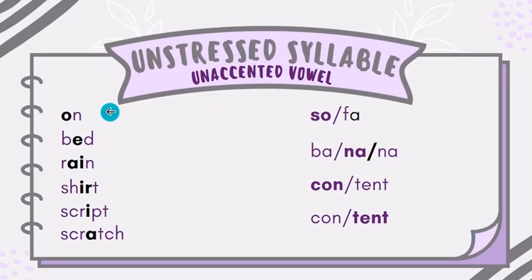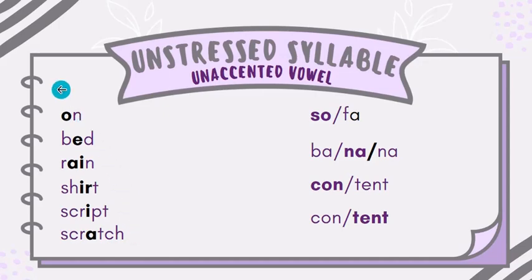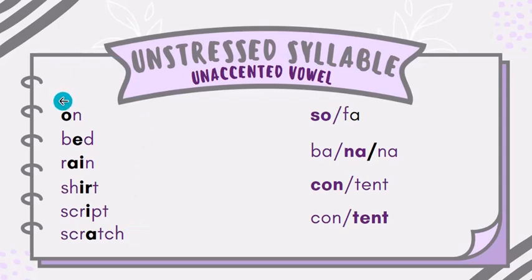Here are some words: on, bed, rain, shirt, script, scratch. Two-letter, three-letter, four-letter, five-letter, six-letter, seven-letter words. But all of these words are monosyllabic because we have a single vowel sound in all of them — long A, a single vowel sound, an R-controlled vowel, then E, E, O and E. So if you have a single-syllable word, a monosyllabic word, the vowel will say either its long or short sound — the complete long and short sound. These are stressed syllables where vowels say their complete sound.